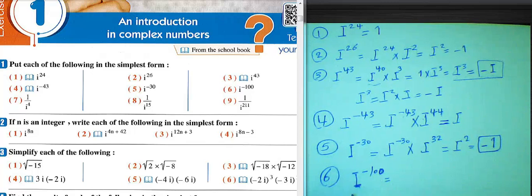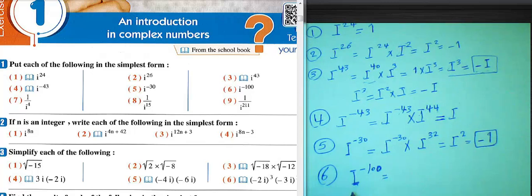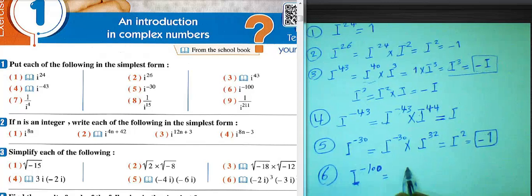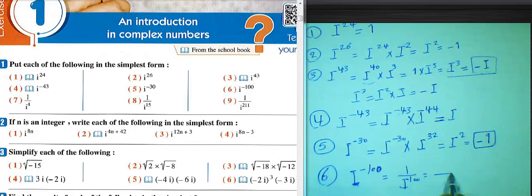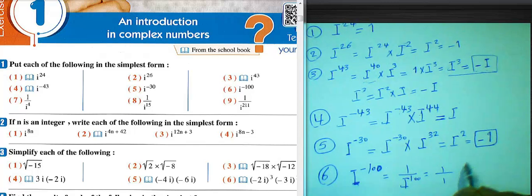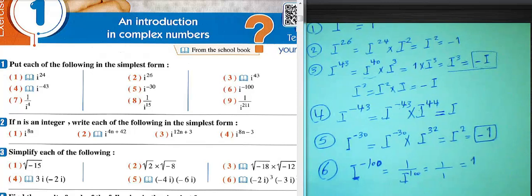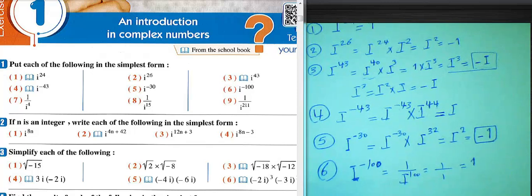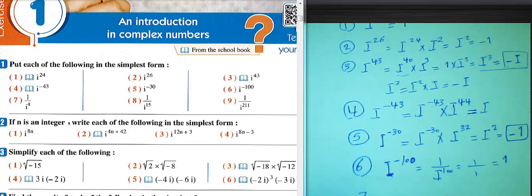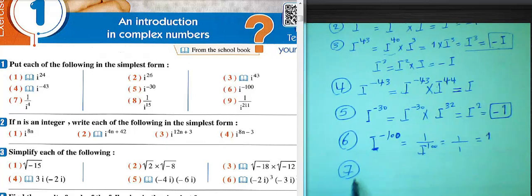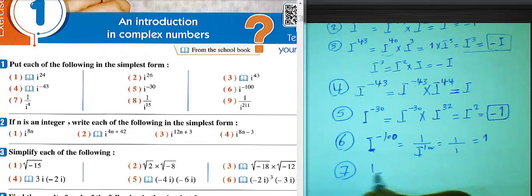Number 6: i^-100. We know 100 can be divided by 4, so we can write i^100, and 1 over 1 equals 1. The result will be 1, because 100 can be divided by 4.